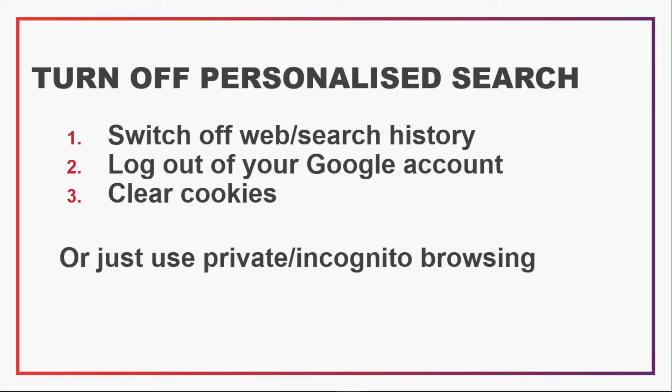So how can you turn off personalised searching? There are a number of ways — for example, you can switch off your web or search history, log out of your Google account, and clear the cookies on your device or browser. The easiest way is probably just to go into a private or incognito browsing mode.